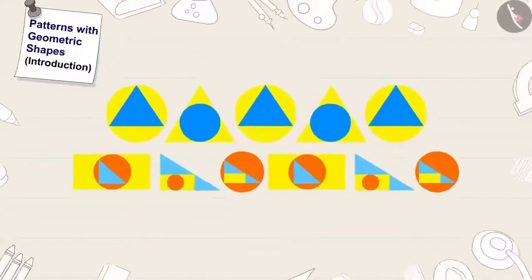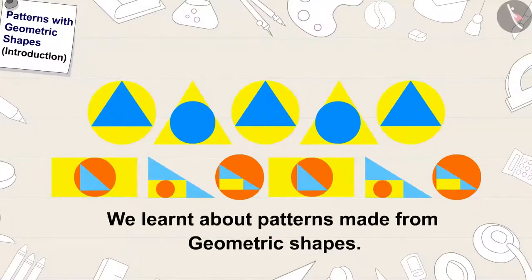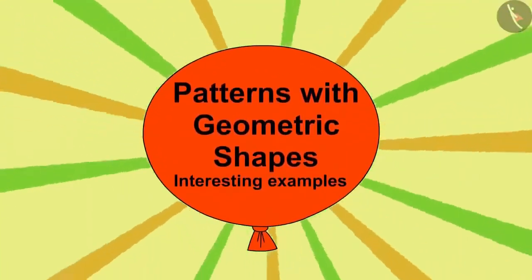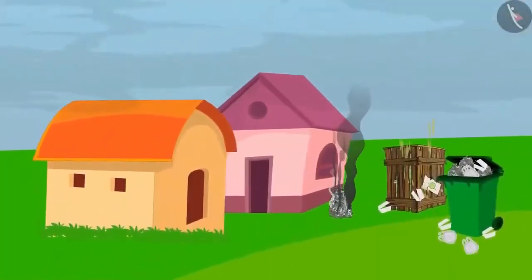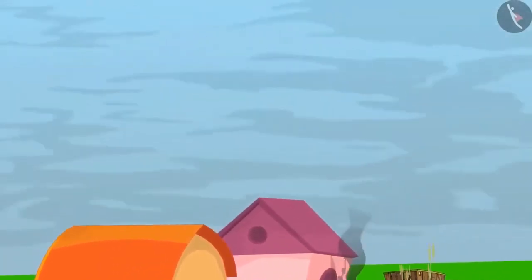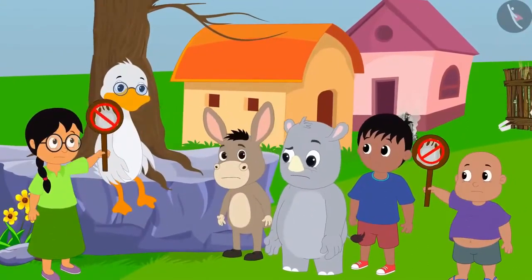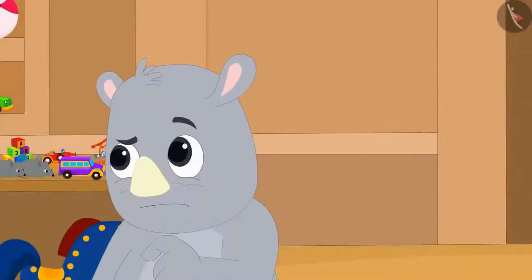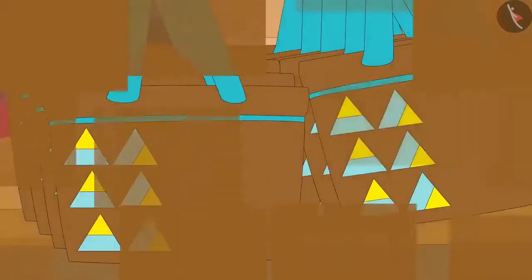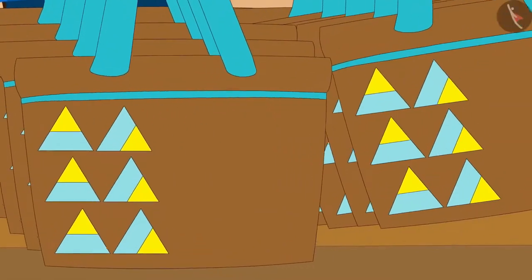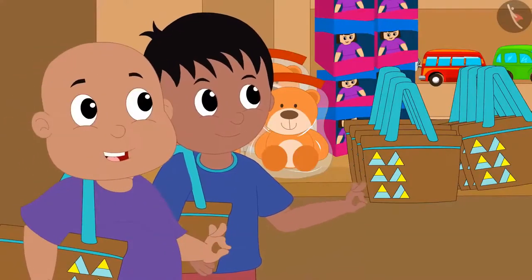Hello children. In the previous video, we learned about patterns made from geometric shapes. In this video, we will learn more about it by some interesting examples. Plastic is causing a lot of pollution in Champapur. Therefore, all the villagers have decided not to use plastic. Gagu wondered if he could sell patterned cloth bags made of geometric shapes at his shop. Gagu made the first pattern on a cloth bag, and the villagers liked the bags of this pattern very much.